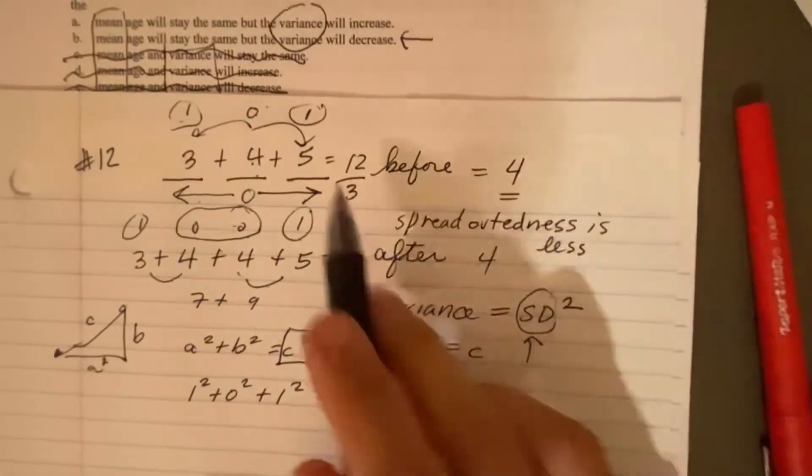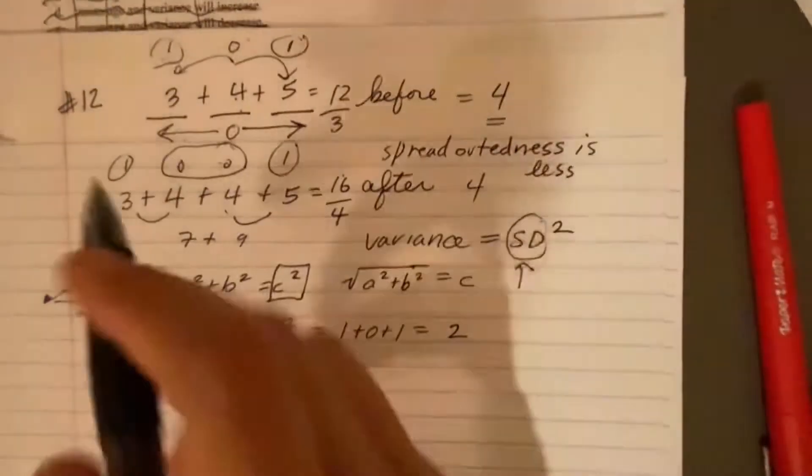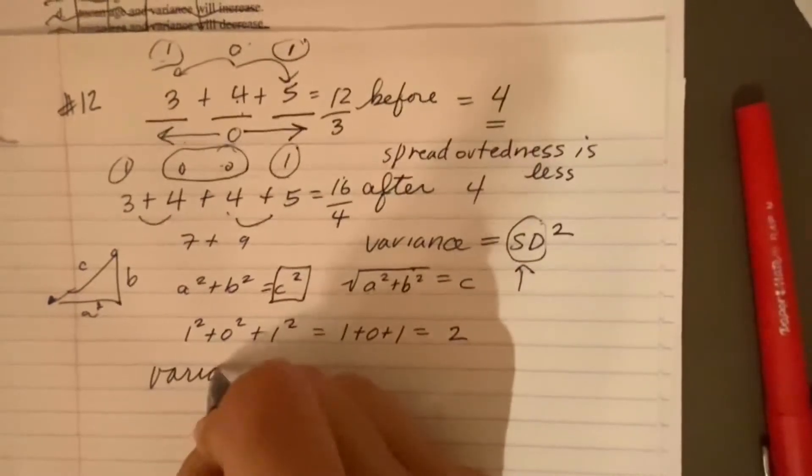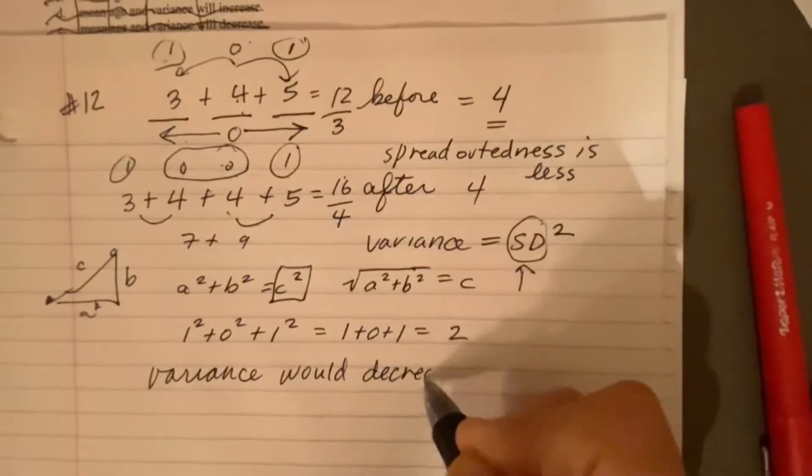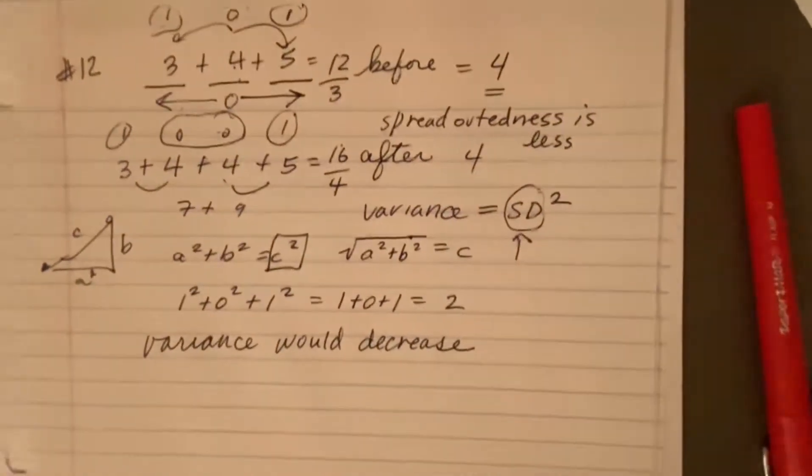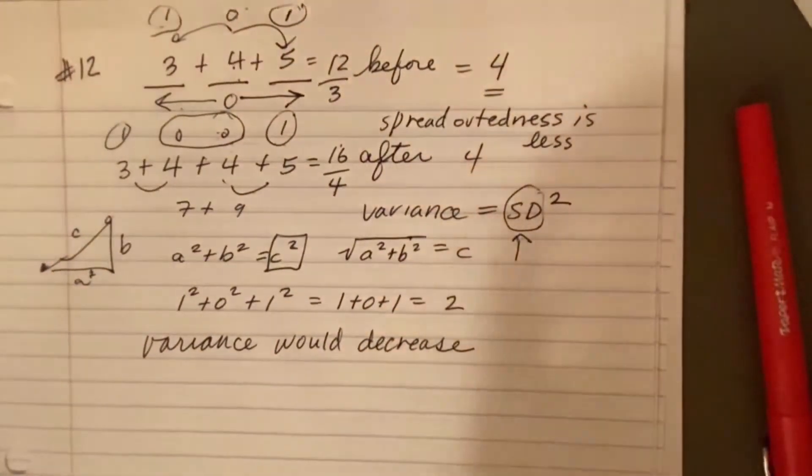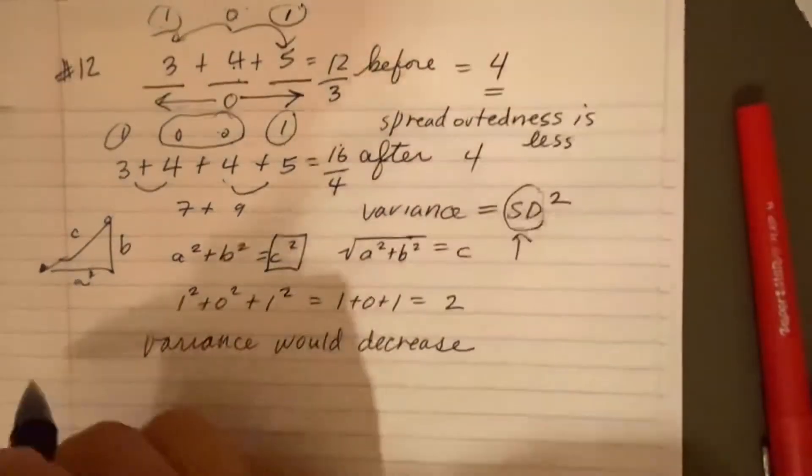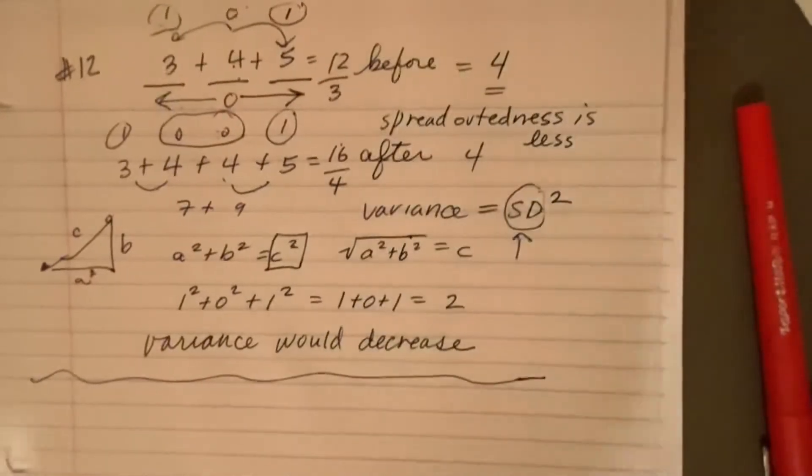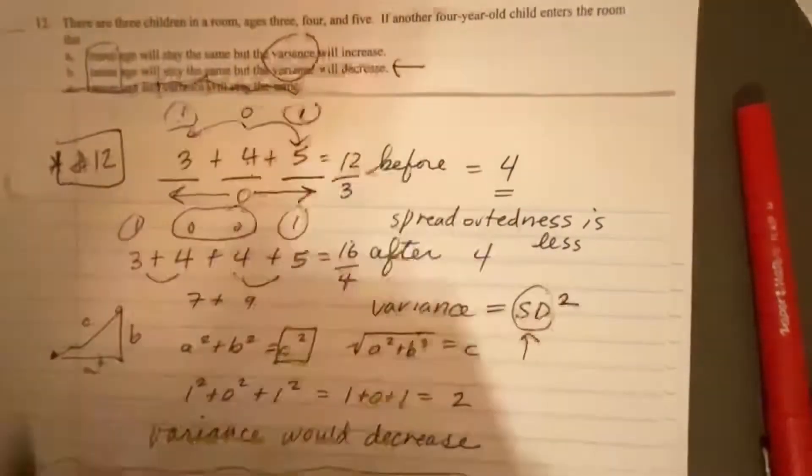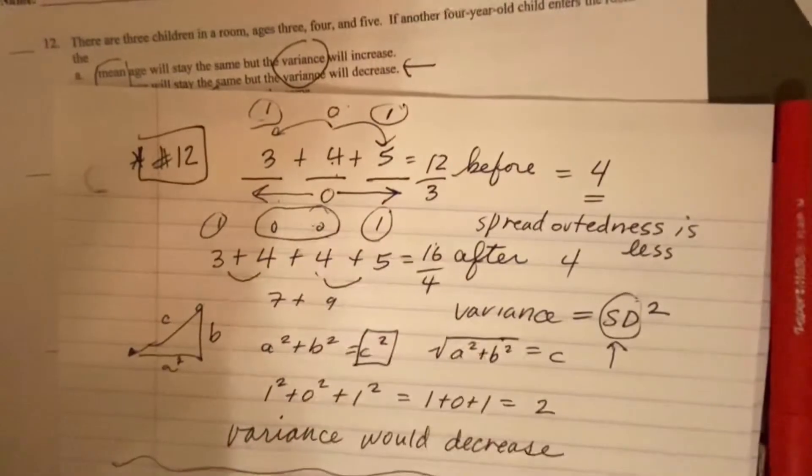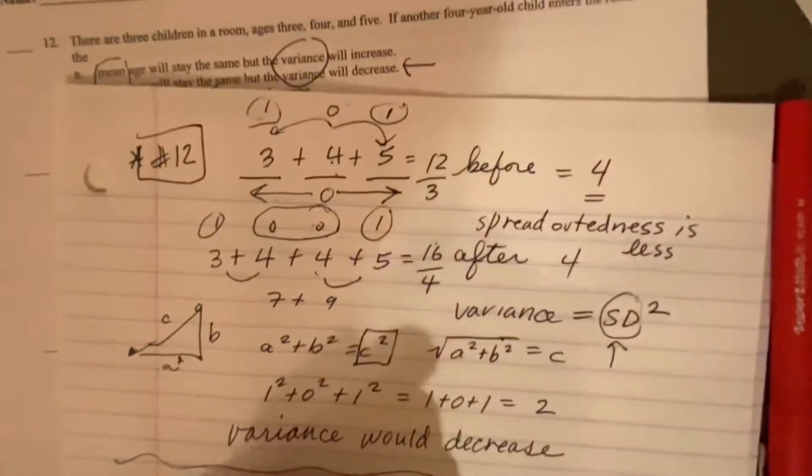So notice the variance here would decrease. Using kind of logic and a rough approximation of what we did in class, of the formula for standard deviation and variance. So let me know if you have more questions on this, and I can actually show you how to do this on a calculator and actually calculate the variance or using the formula sheet. Number 13.